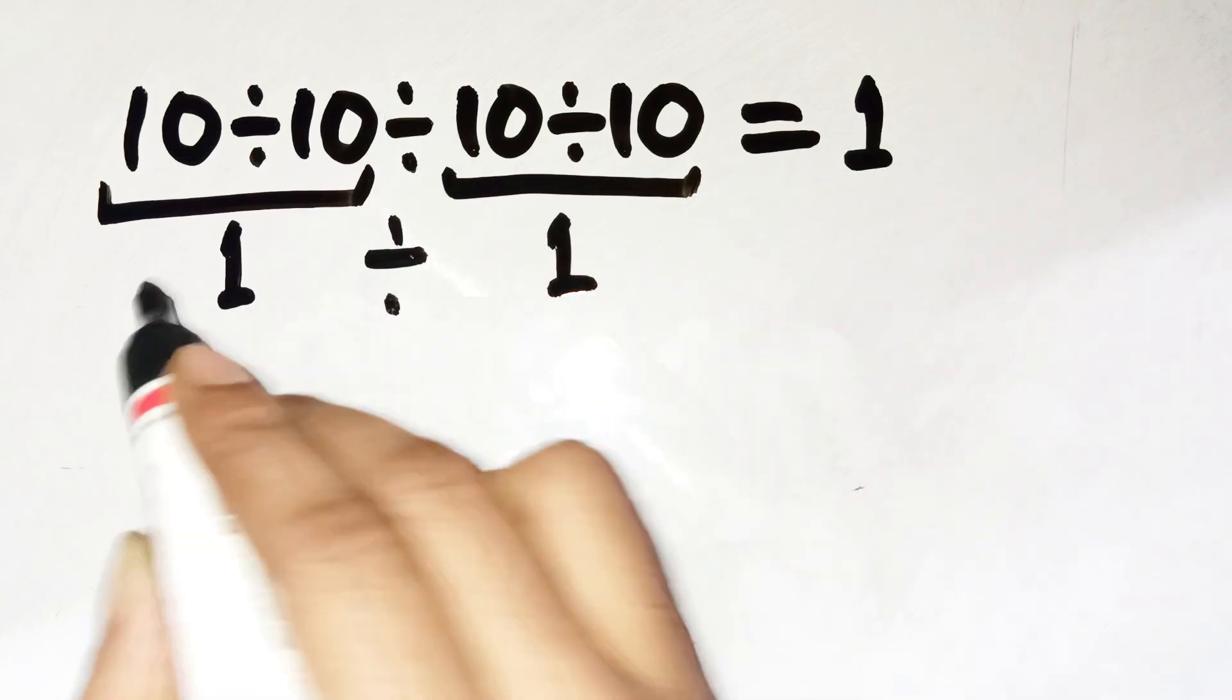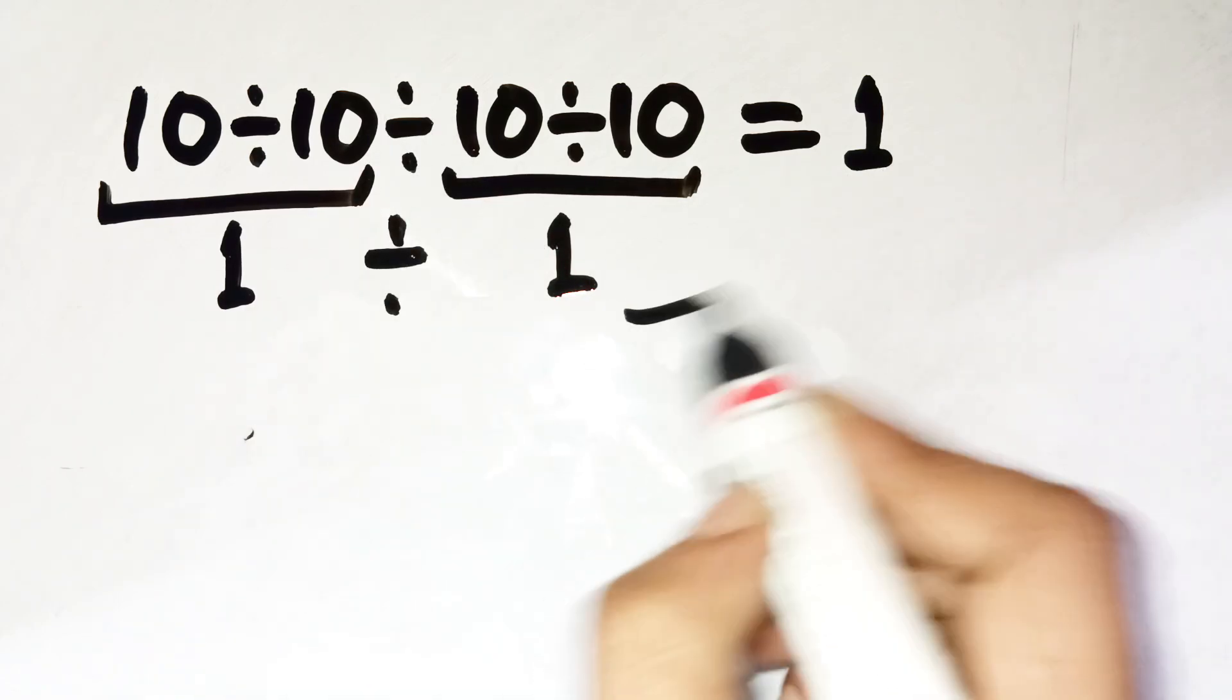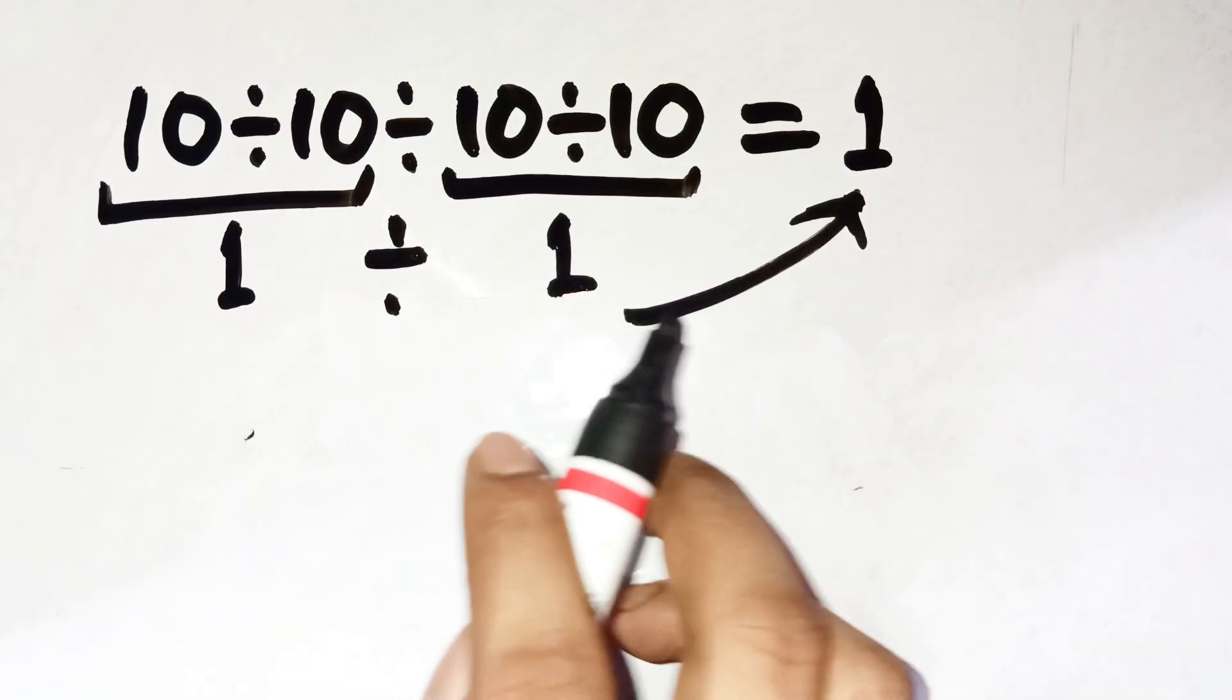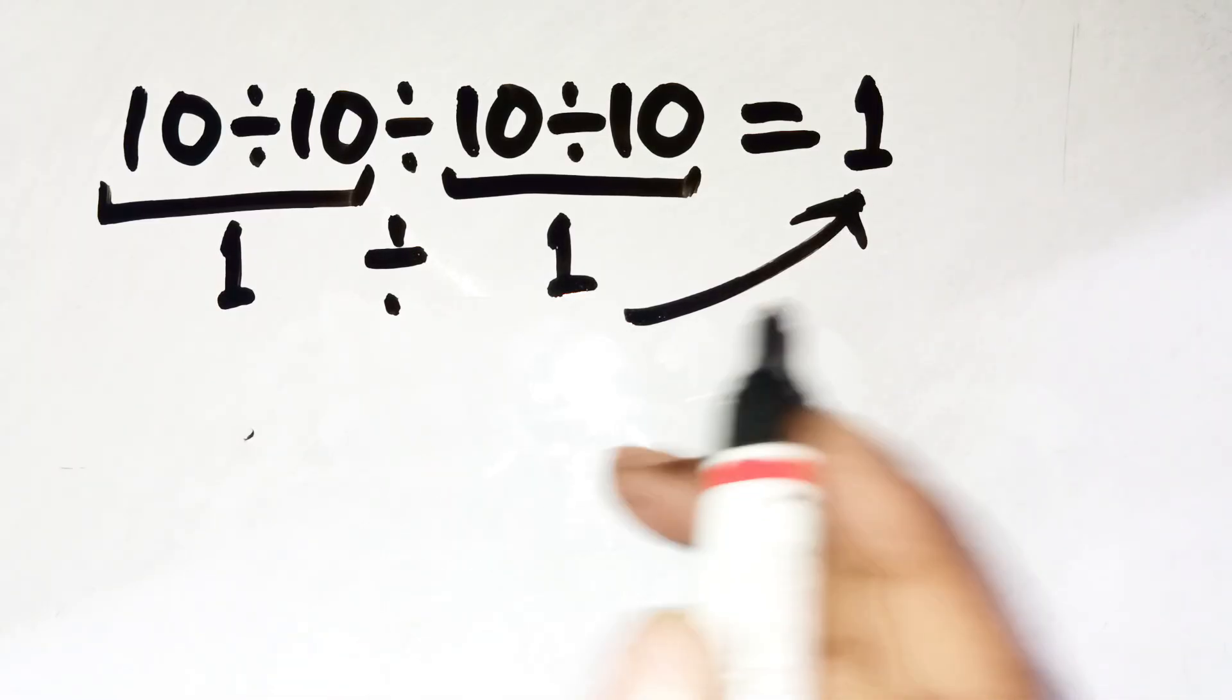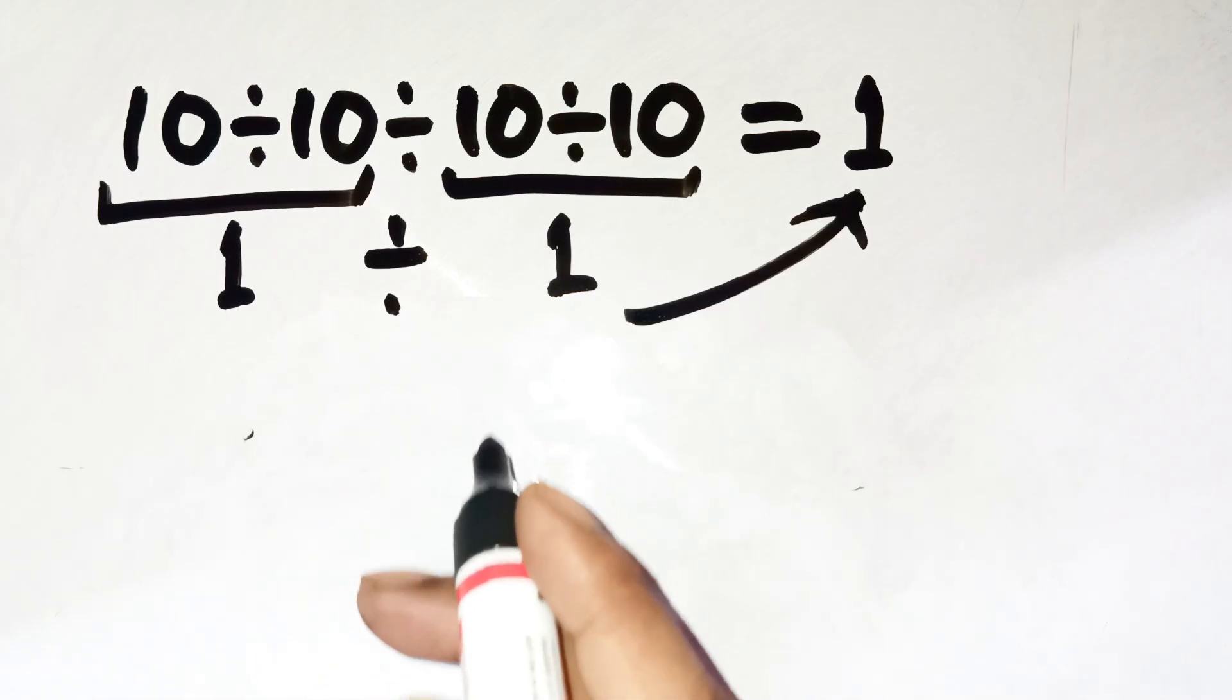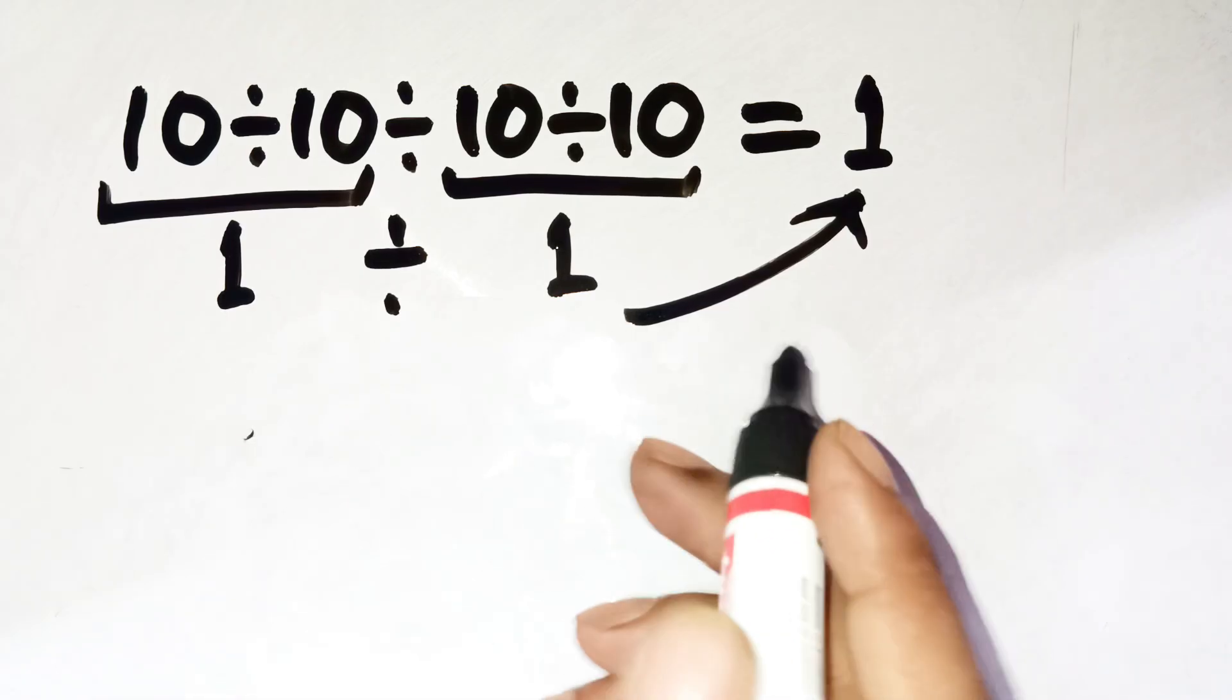And then you finish it off with 1 divided by 1 equals 1. It feels smart, it feels efficient, but it's absolutely not how this expression works. This is exactly the trap the problem is designed to create.